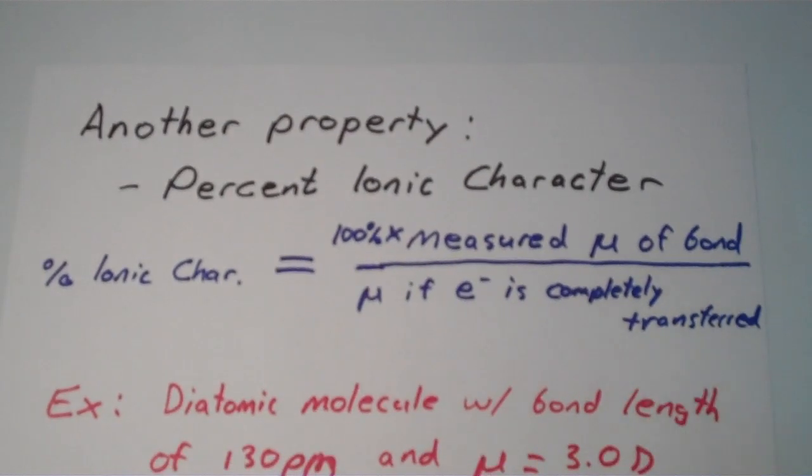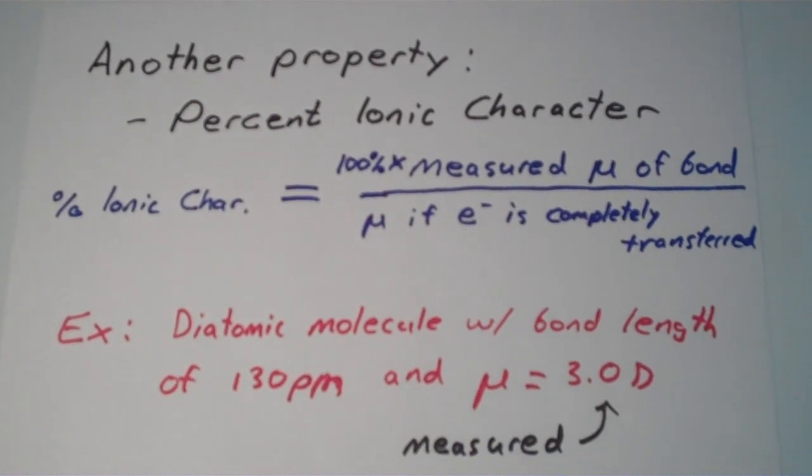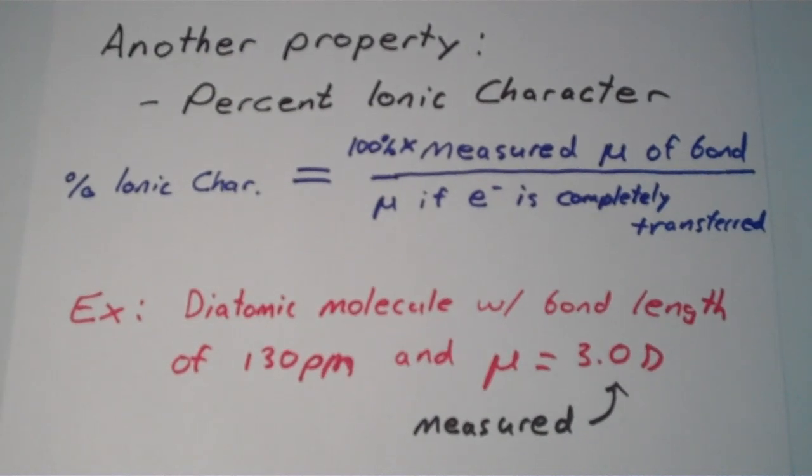As an example, let's consider a diatomic molecule with a bond length of 130 picometers and a measured dipole moment of 3.0 Debyes.